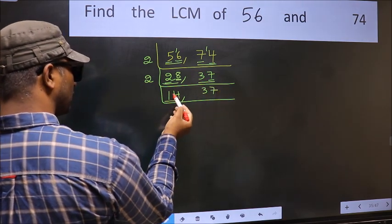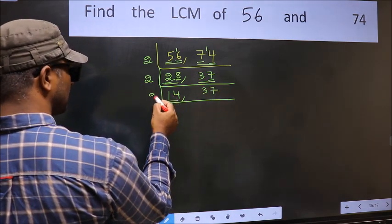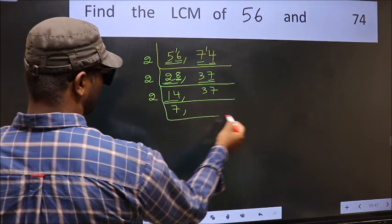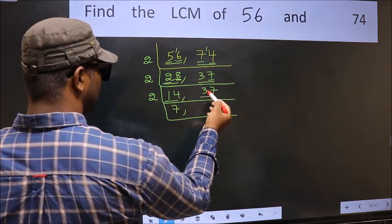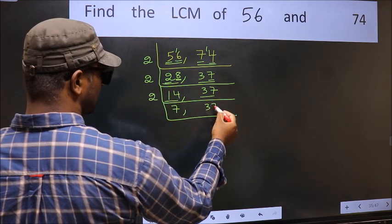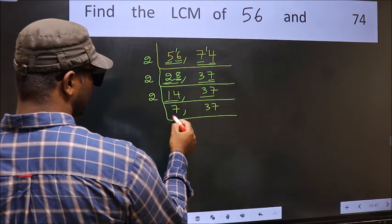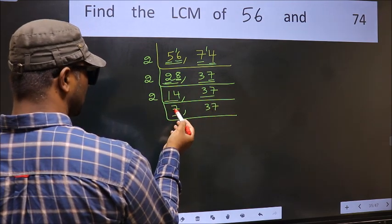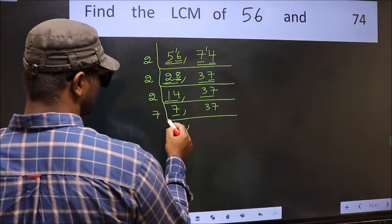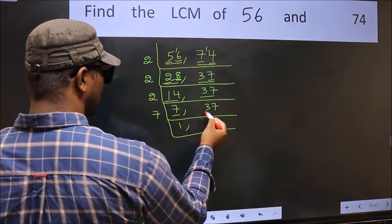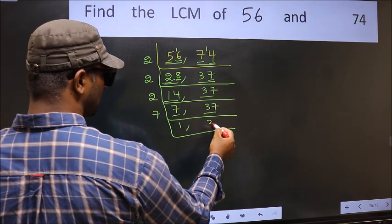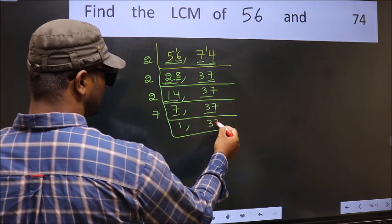Now here we have 14. 14 is 2×7, so 14. The other number, 37, is not divisible by 2, so you write it down as it is. Now here we have 7. 7 is a prime number, so 7×1=7. The other number, 37, is not divisible by 7, so you write it down as it is.